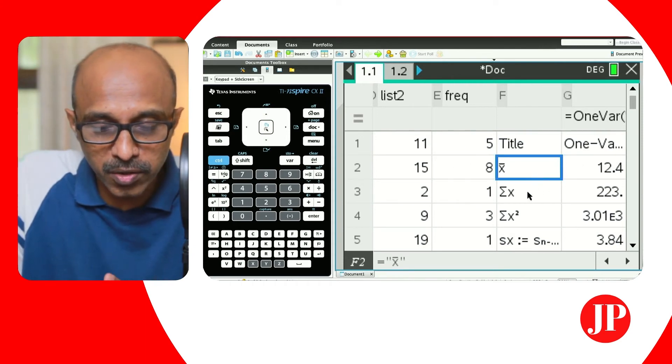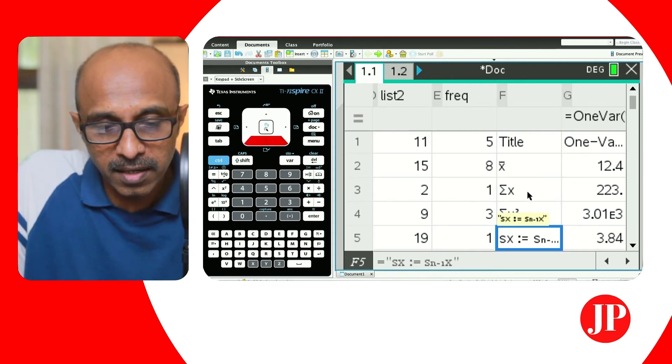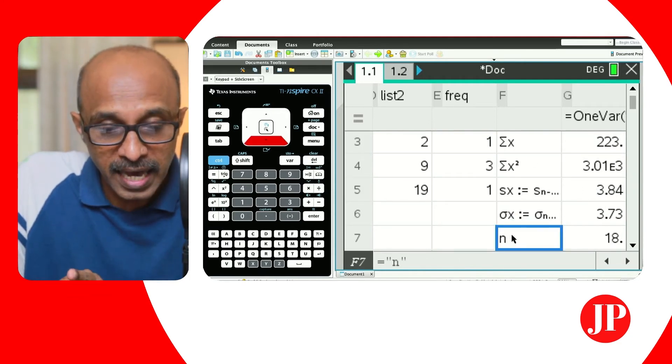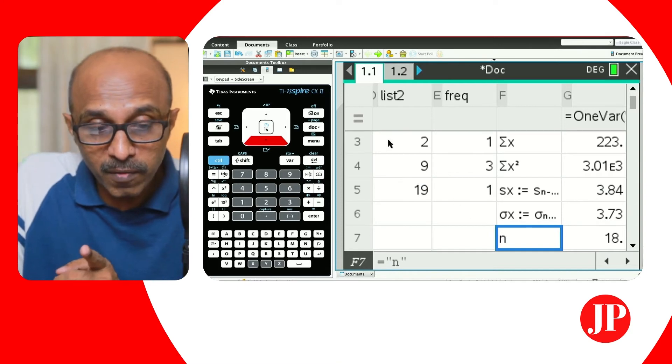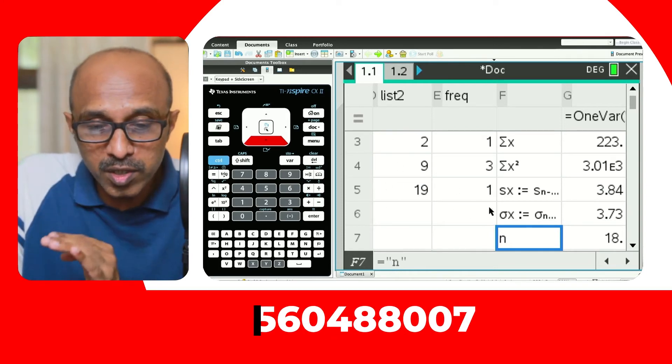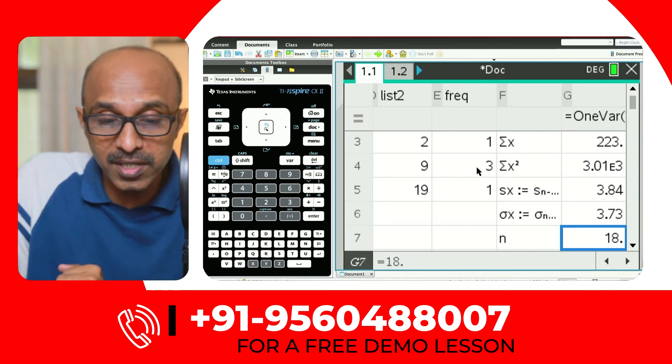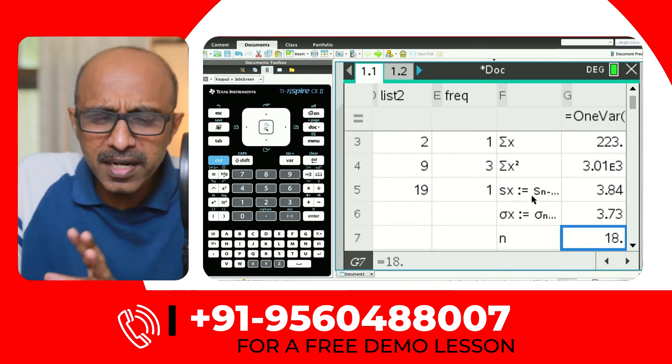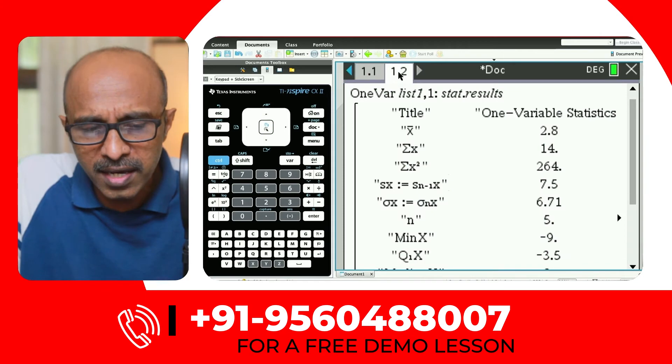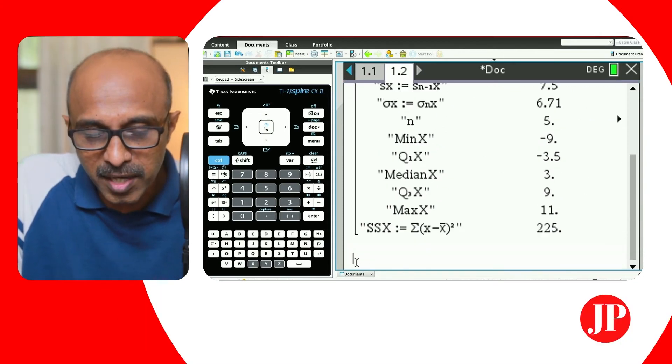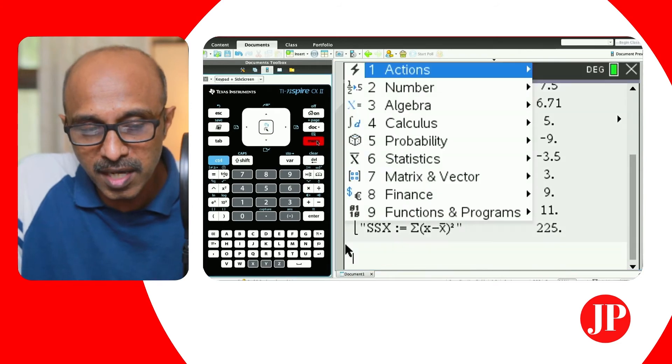And just like that, you've got your one variable statistics for this frequency distribution. Again, you can scroll through this and see your statistics. You've got your X bar as the mean. This is SX is the sample standard deviation. And you recall we just entered five rows, but it's 18 because it's the sum of all the frequencies. There's a total number of data points available. Now, it might be a little crowded to read here, which is why sometimes it is advisable that you could use the same thing on the calculator page.